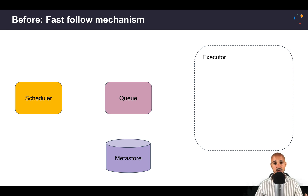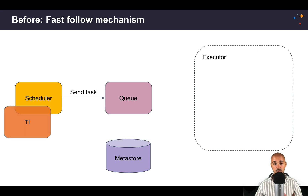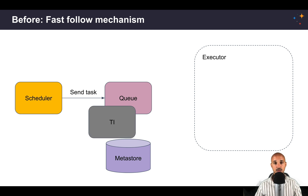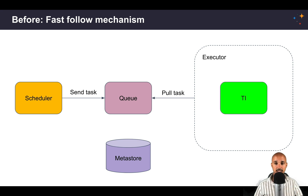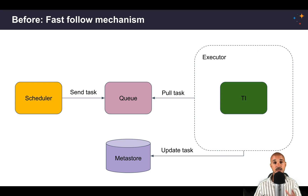Let's say you want to execute a task. First, that task has the status 'scheduled', then the scheduler sends the task to the queue and the task has the status 'queued'. Next, the executor pulls the task from the queue and the task is marked with the status 'running'. As soon as the task is completed, the executor updates the metastore with the new status. Finally, the scheduler looks for other tasks to execute in your data pipeline, and the same process goes over and over until there are no more tasks to execute.